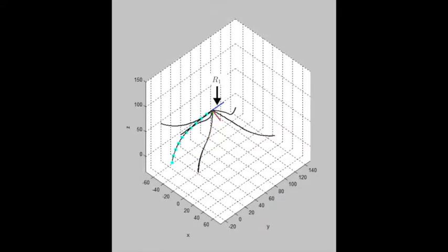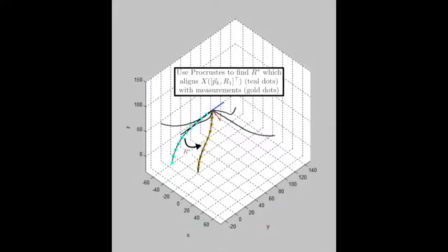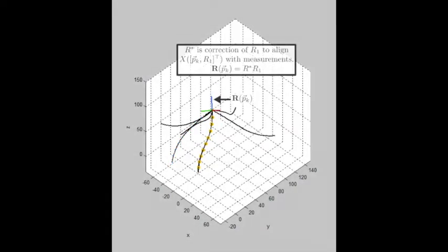First, the kinematic shaft is constructed for an arbitrary orientation, R1. Then a Procrustes alignment is used to find the correction between R1 and the orientation that best aligns R1's backbone curve with the set of past measurements. This correction is independent of choice of R1.